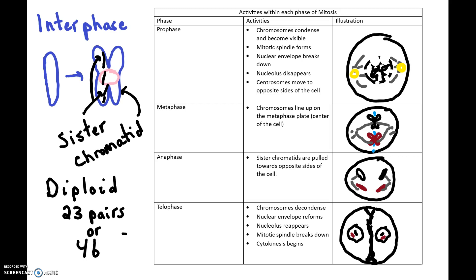So now we have two new cells that originated from one parent cell. We had one diploid cell at the beginning; at the end we have two diploid cells. Those two end cells are called daughter cells, and they are genetically identical to one another. Cell number one has one black chromosome and one red chromosome, and cell number two has one black chromosome and one red chromosome — genetically identical, and just like the original parent cell.